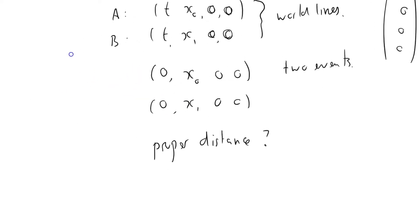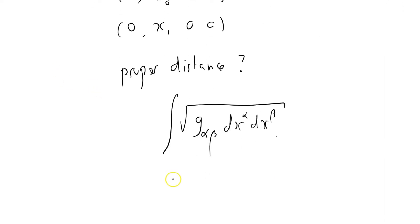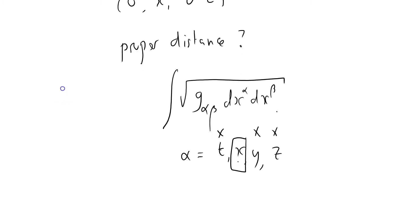Everything about your Newtonian intuition should say we've got two objects that are at rest physically and at rest in a coordinate system. They should have the same separation between them. But that is not the case. The definition of proper distance is the integral of the square root of G alpha beta dx alpha dx beta. In this case, alpha ranges between T, X, Y, and Z, but only X is changing.